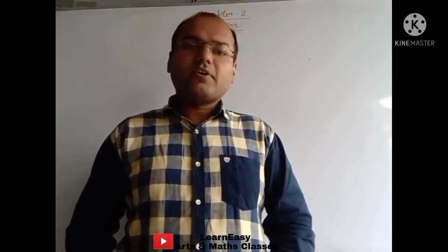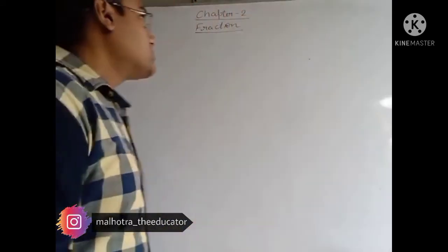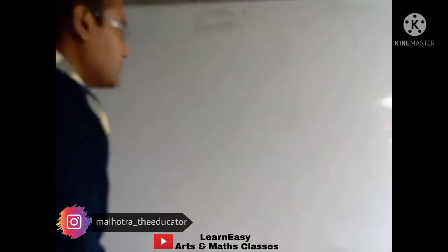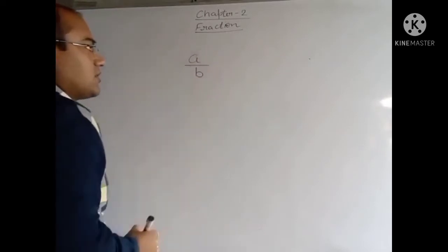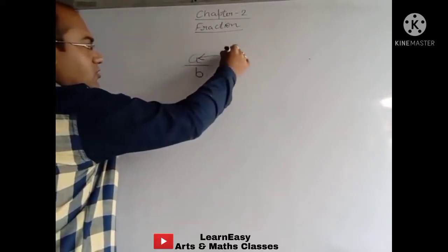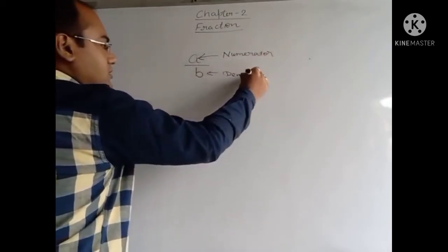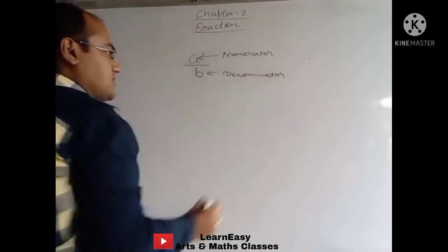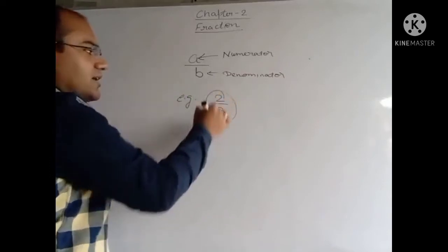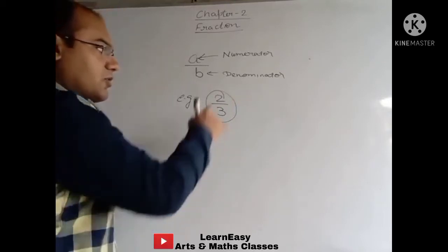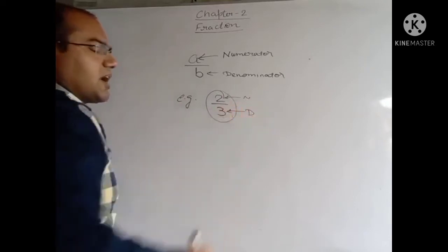Hello students. Today in this video I will explain chapter number 2. The name of the chapter is Fractions. What are Fractions? All those numbers which are written in the form of A upon B. Here A is known as numerator and B is known as denominator. For example, 2 upon 3 — here 2 is the numerator and 3 is the denominator. Such numbers are known as Fractions.